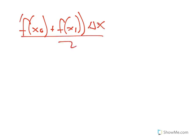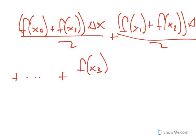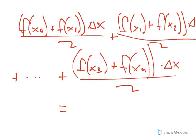So it would be F of X naught plus F of X1 times delta X over 2, plus F of X1 plus F of X2 times delta X over 2, and then you add that to the next one. And then you finish with F of X3 plus F of X4 times delta X over 2, and that gives you your answer.